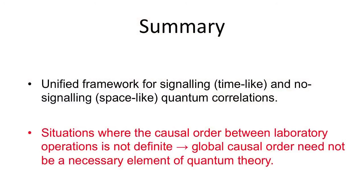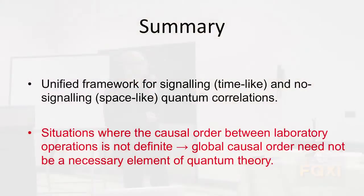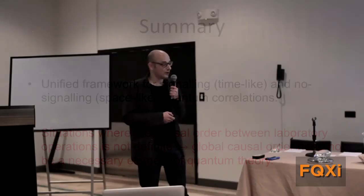That's the summary of my talk. What I've showed is a unified framework for both signaling and no signaling quantum correlations. Even if it turns out that these correlations with indefinite causal order are not realizable in nature or we can't find them, I think the framework itself is very useful because it's a unified way to treat both time-like and space-like correlations, which are usually in the standard formulation differently treated. I showed the situations where causal order of laboratory operations is not definite, which might indicate the global causal order need not be the crucial part of quantum theory.